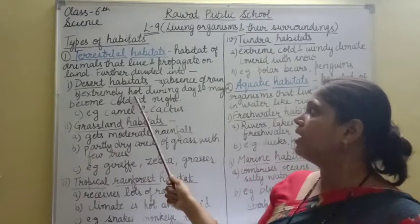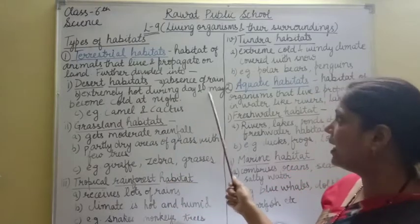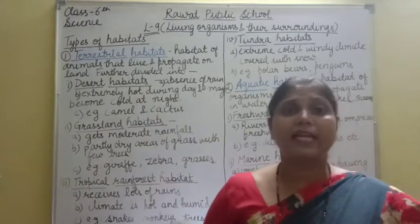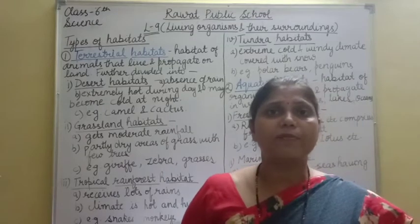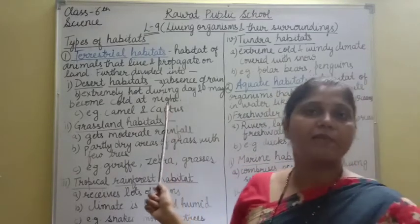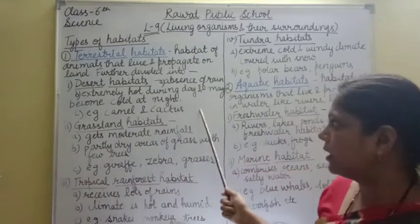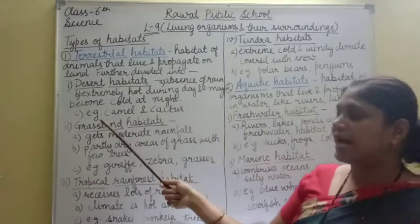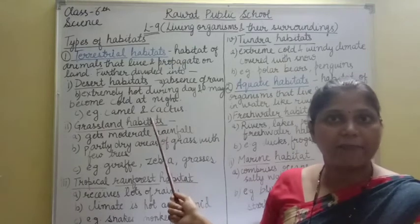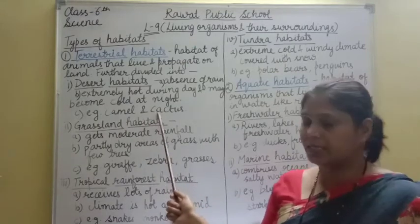Desert habitat की characteristics: extremely hot temperature during day and may become cold at night. Example — कौन से animals और plants हैं जो desert habitat में survive करते हैं? Camel and cactus.